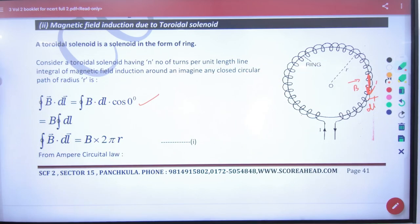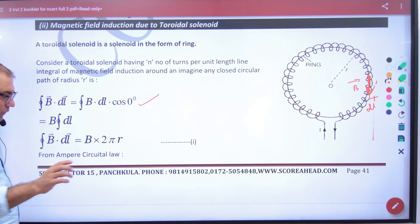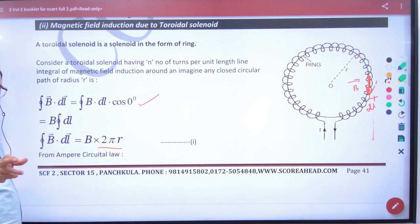B DL cos 0. So what will be the integration of DL? The closed path 2πr. So you have closed path length, what will be small r? What have you taken here?